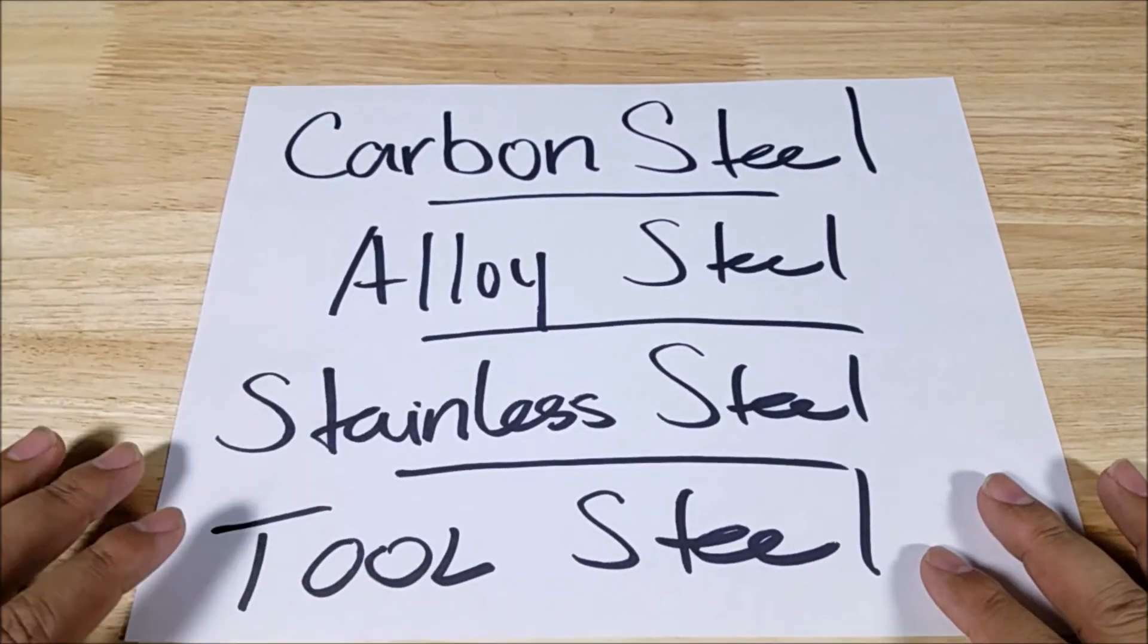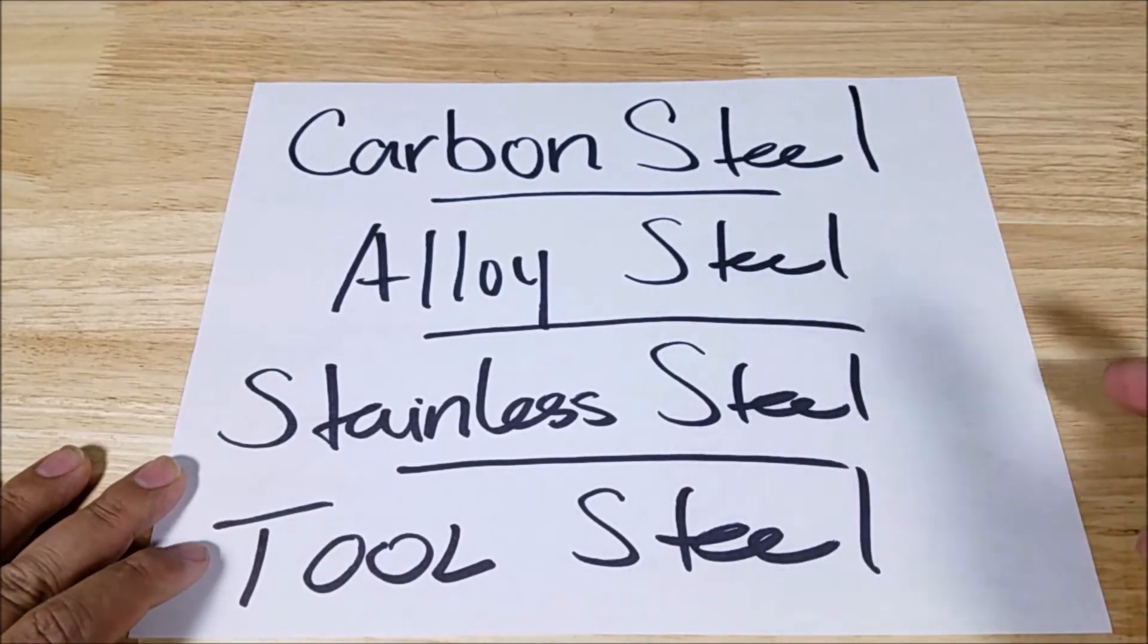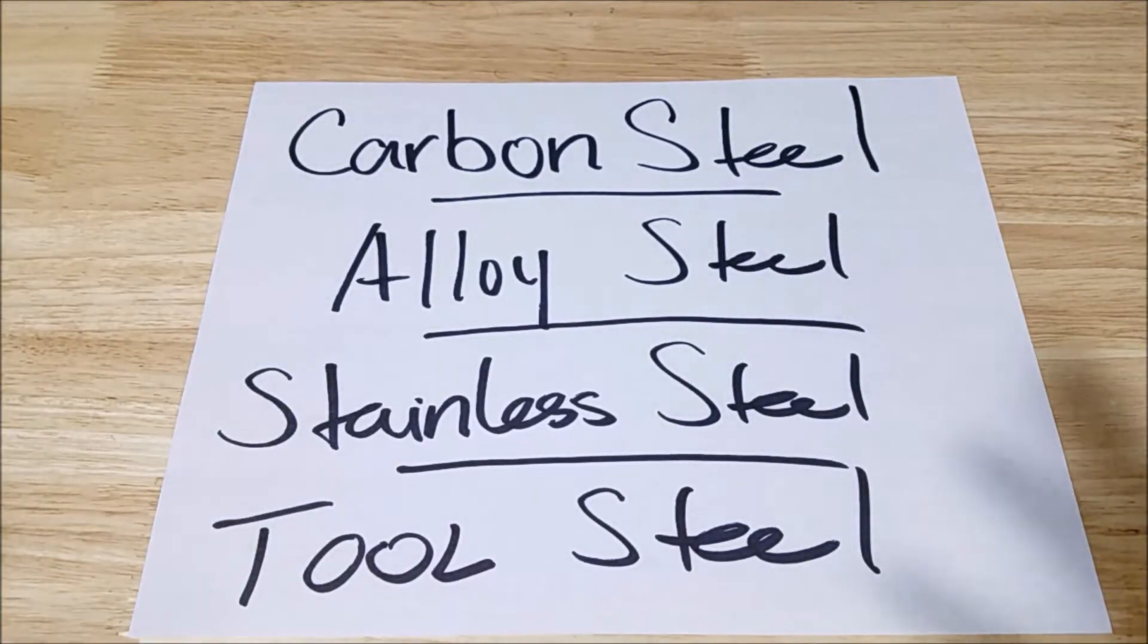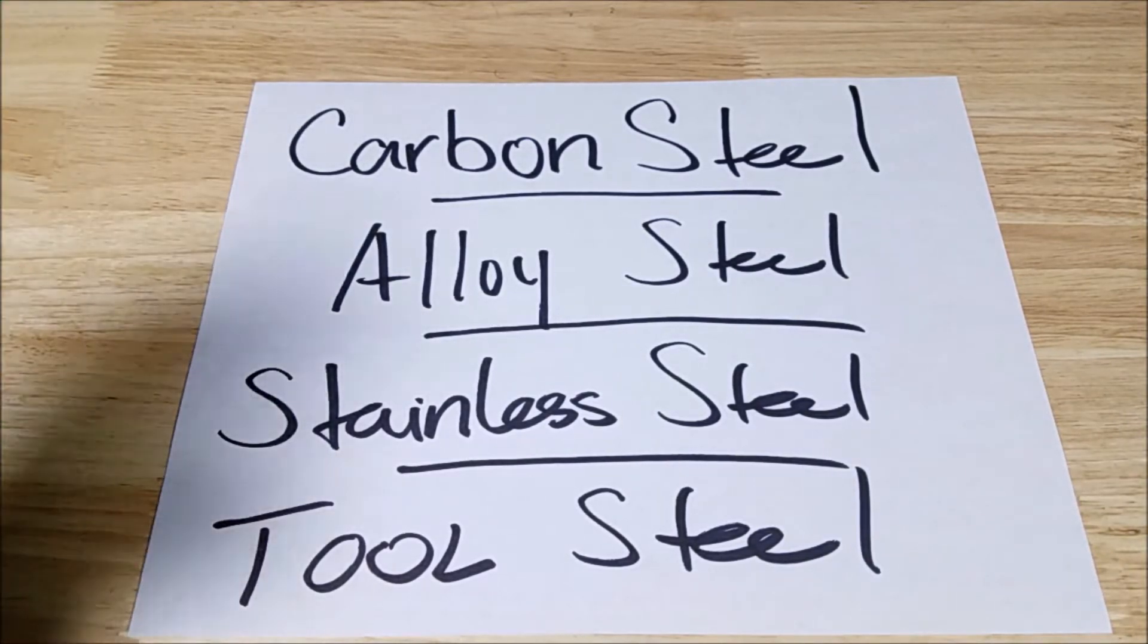Instead of looking at the entire forest of knives, we're only going to be concentrating on these four trees in the forest because these are the four types of steel that we really should be looking at most of the time. And that's carbon, alloy, stainless and tool steels.